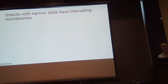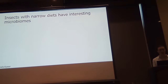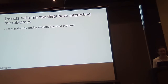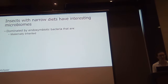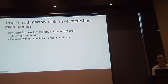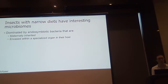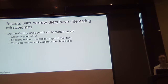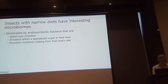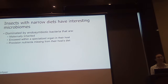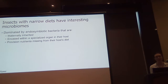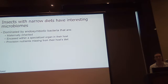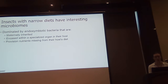Insects with narrow diets have interesting microbiomes. They are predominantly composed of endosymbiotic bacteria that are maternally inherited, encased within a specialized organ in their host, and these endosymbiotic bacteria provision nutrients missing from their host diet. For blood-feeding insects, these endosymbiotic bacteria normally provision B vitamins that are not present in the blood meal and the host cannot manufacture on their own.